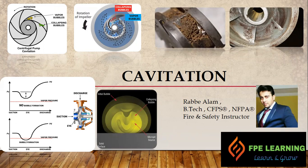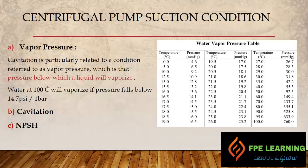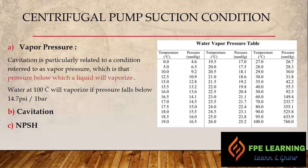Before going into cavitation, the first topic I want to discuss is vapor pressure. For centrifugal pump suction conditions, there are three things we need to take care of: vapor pressure, cavitation, and NPSH — which is net positive suction head.